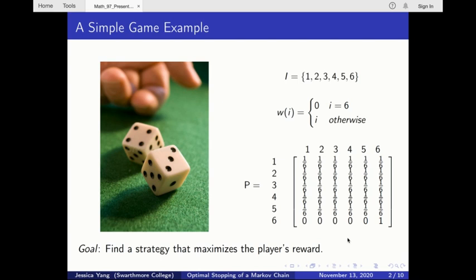The reward function here says the reward of state 6 is 0, and the reward of any other state equals the roll. The probabilities that a process could transition from any state i to any other state j is given by the transition probability matrix p. In this example, p is time homogeneous, meaning the transition probabilities do not vary with time.